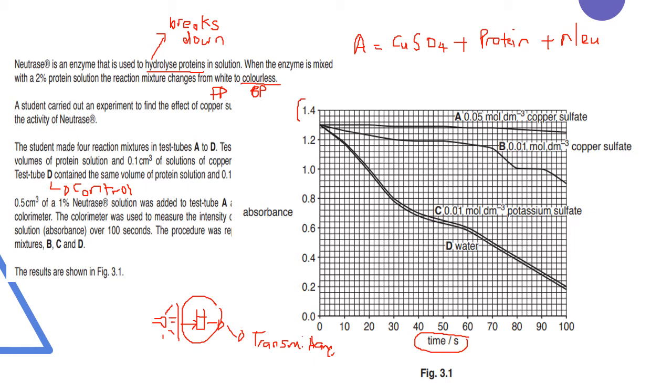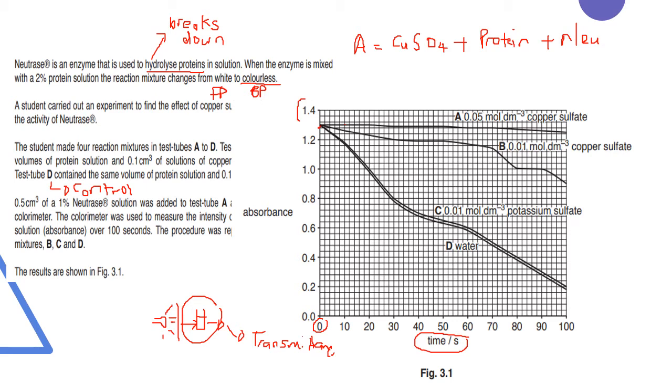Now we take solution A and at zero seconds, we can see that the absorbance is somewhere around 1.3. And then at 10 seconds, it still stays the same and stays constant throughout. So what that tells us is that A is absorbing light consistently over the 100 seconds. B has a bit of a different trajectory. And if you look at C and D, they also have a different trajectory. If you want to attempt the question yourself before you watch the next part, please pause it, try the question and then see what the answer is.